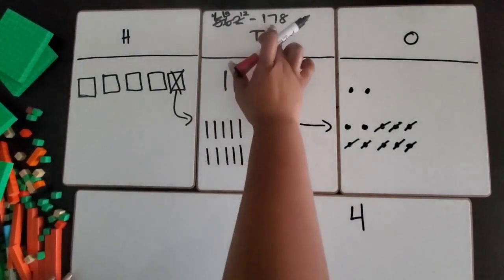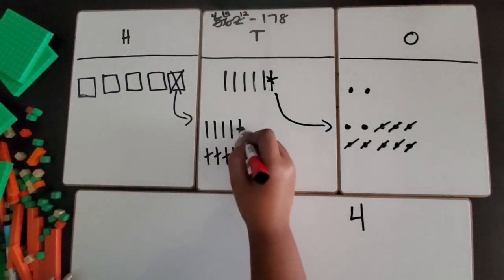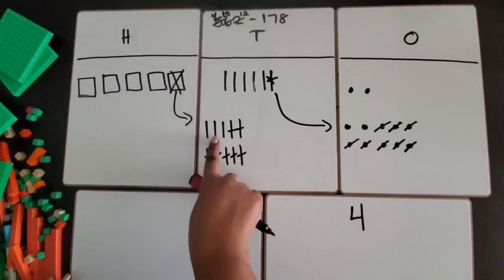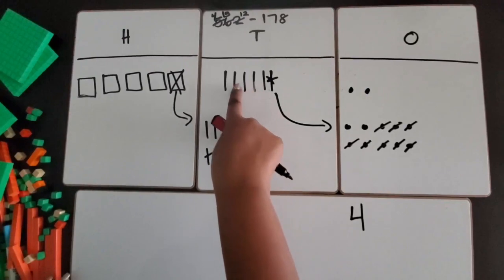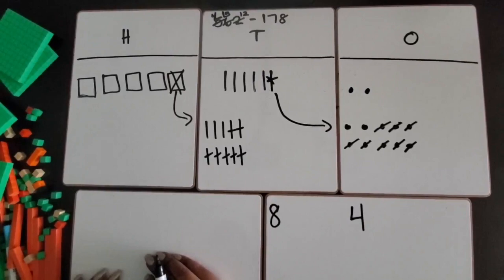So now I can subtract 7 tens. 1, 2, 3, 4, 5, 6, 7. I still have 1, 2, 3, 4, 5, 6, 7, 8. So I'm going to write that here in my 10s place.